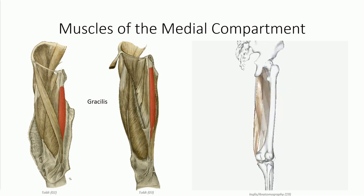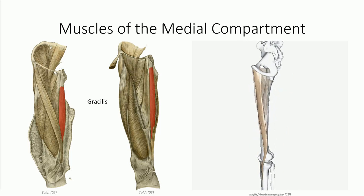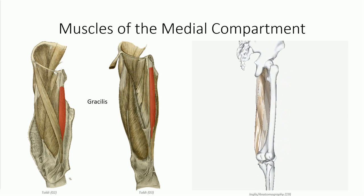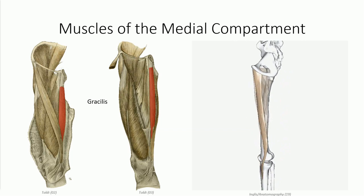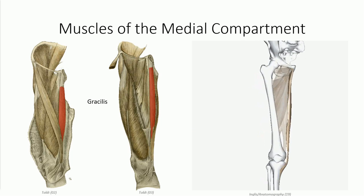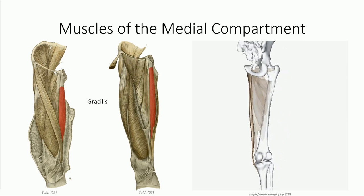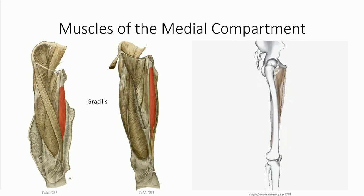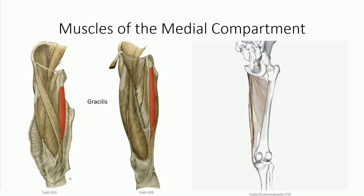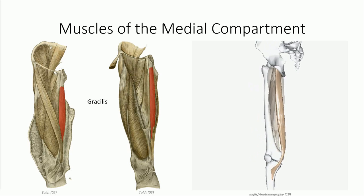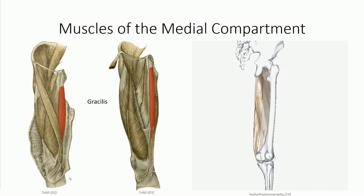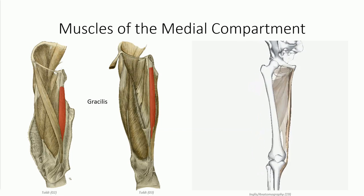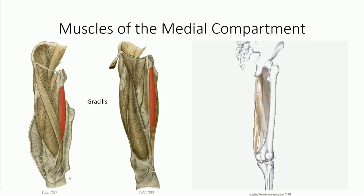The final muscle on the list is gracilis. The name is a Latin term for slender, which describes the thin appearance of this muscle. It arises off the anterior surface of the pubic body and projects inferiorly as the most medial of the medial compartment muscles. It passes posterior to the knee, then wraps anteriorly to insert on the tibia, just posterior to the sartorius muscle. Its principal function is as an adductor of the hip, but as it also passes posterior to the knee joint, it also serves as an accessory knee flexor.